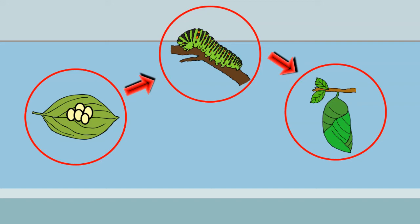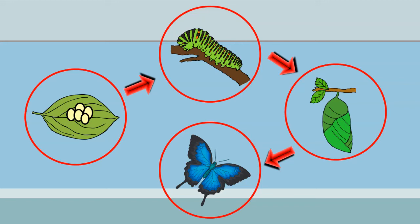It is now a pupa or chrysalis. It is inside the pupa that the caterpillar changes into a butterfly. The butterfly emerges from the pupa and is ready to fly. The adult female butterfly lays eggs and the cycle starts all over again.